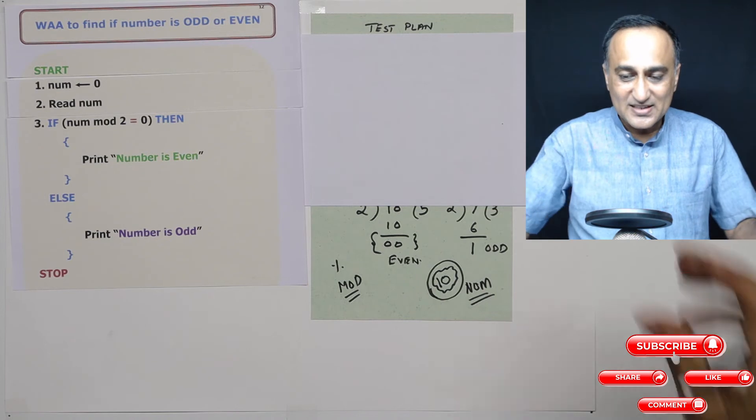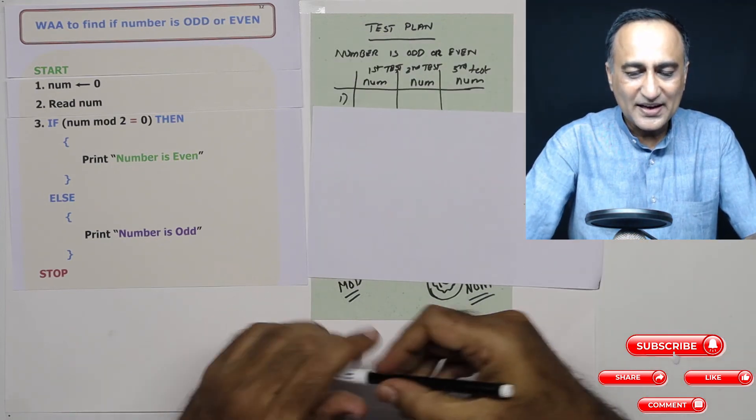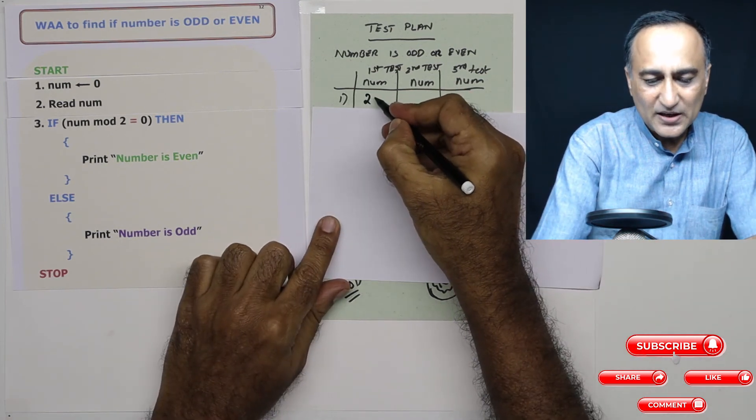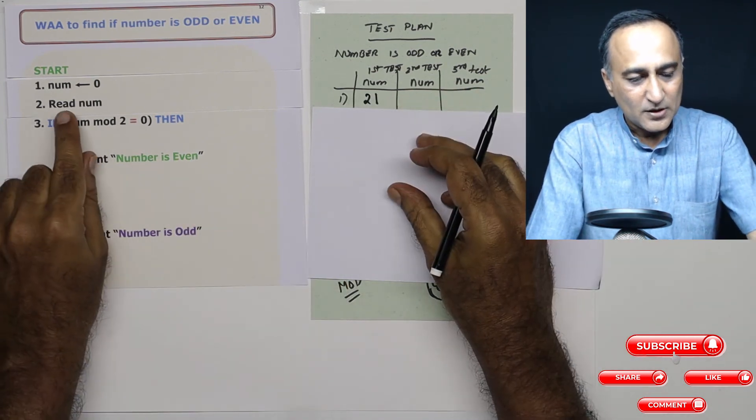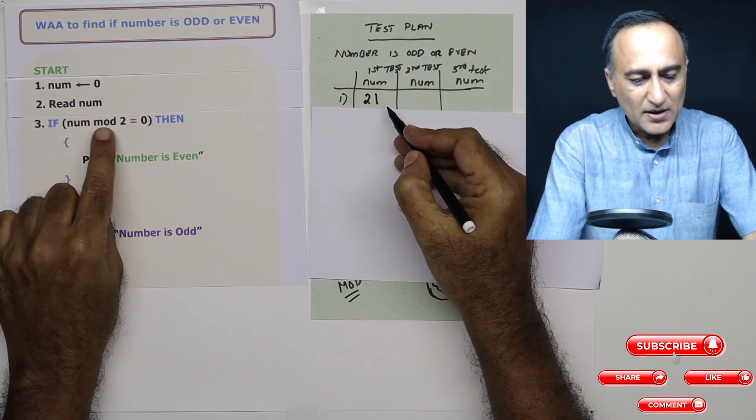The best way to understand this, take a test plan. Let's say we take the first number, let's take a number like 21. So I read a number, number is 21, 21 mod two.